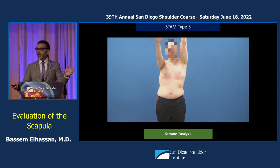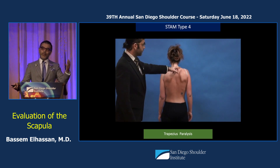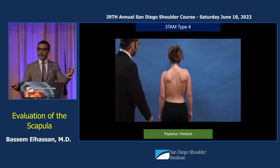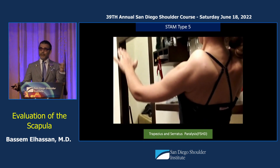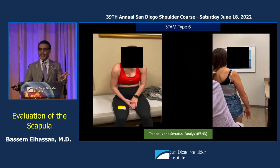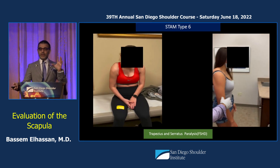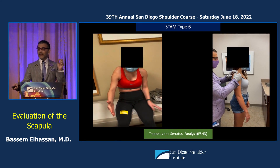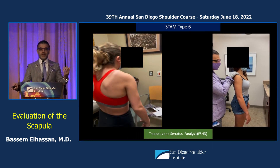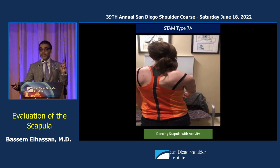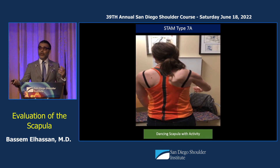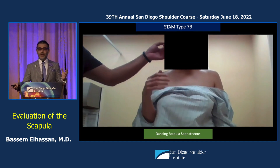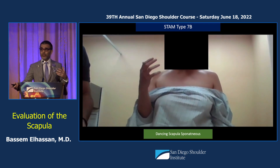STEM 3 is serratus paralysis. This is what we want to change about what we've learned, because this is all we knew — dyskinesia or paralysis — but STEM is different. STEM 4 is trapezius paralysis. STEM 5 is both trapezius and serratus paralysis. STEM 6 is a very hard one — the patient comes with the shoulder locked in front, they cannot move, you cannot reduce them, they look like dystonia but the muscles are normal with very abnormal muscle activation. STEM 7A is a dancing scapula during attempted motion, and 7B is a scapula that dances regardless of whether the patient moves or not.